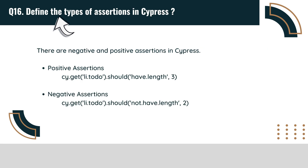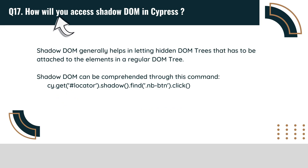Define the types of assertions in Cypress. There are negative and positive assertions in Cypress: positive assertions and negative assertions.